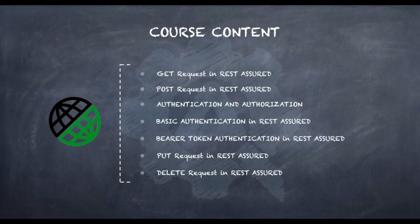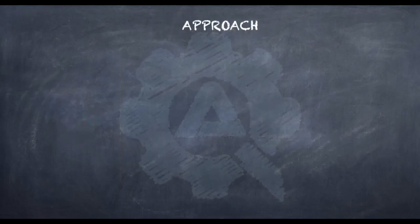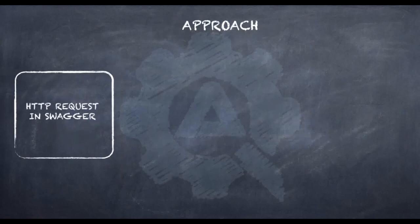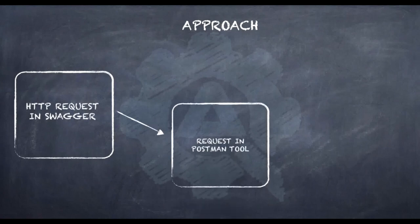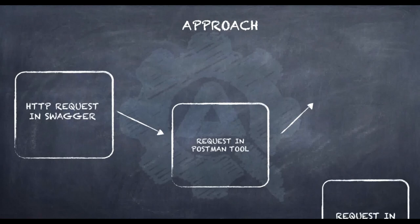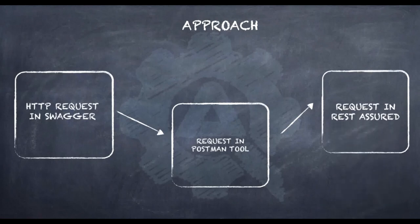We'll follow a particular format to make learning simpler. Initially, we'll use the Swagger tool to understand the HTTP request and learn about the API and its nuances. Having learnt about the API in Swagger, we'll try out the same HTTP request in the Postman tool, which helps us organize requests and responses and understand API behavior better. Finally, we'll write the same request in Rest Assured code.